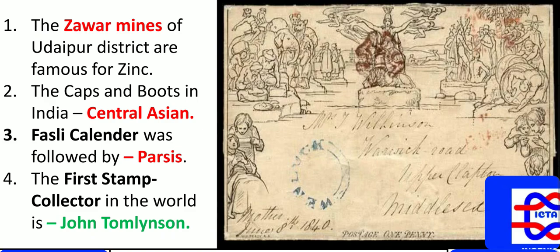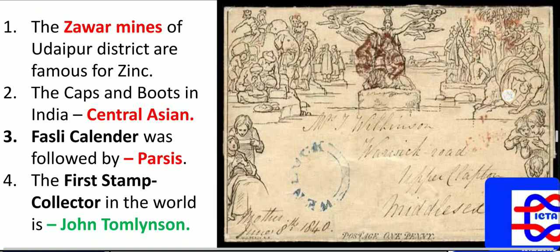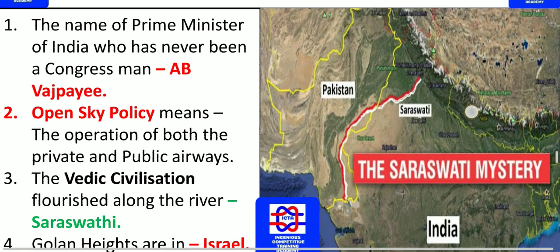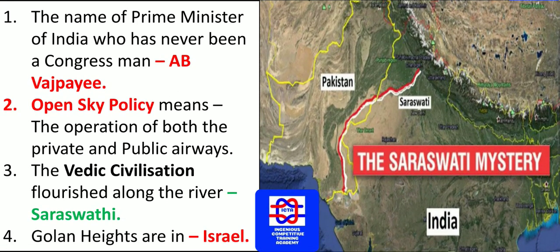Caps and boots in India are Central Asian. The Parsis follow a specific calendar — please remember that Hindus follow the Shaka calendar. The first stamp collector in the world was John Tomilson, who started collecting the maiden stamps.